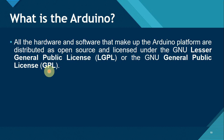All the hardware and software that make up the Arduino platform are distributed as open source, licensed under the GNU Lesser General Public License (LGPL) or the GNU General Public License (GPL). Since Arduino is an open source platform, you can see variations of Arduino made by different companies. This is not piracy — as Arduino is open source, there are generic boards produced from the Arduino board design.